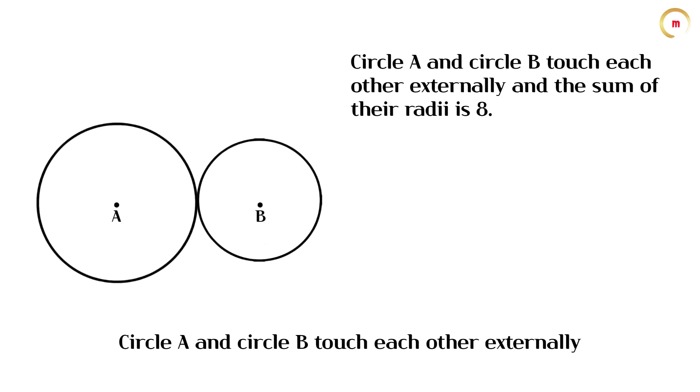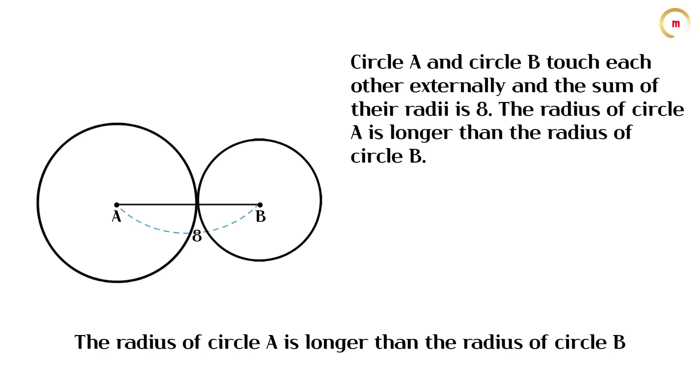Circle A and circle B touch each other externally, and the sum of their radii is 8. The radius of circle A is longer than the radius of circle B.